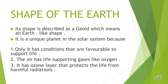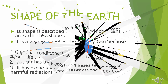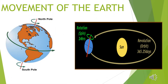Shape of the Earth: its shape is described as a geoid, which means an Earth-like shape. It is a unique planet in the solar system because only it has conditions that are favorable to support life. The air has life-supporting gases like oxygen, and it has an ozone layer that protects life from harmful radiations.